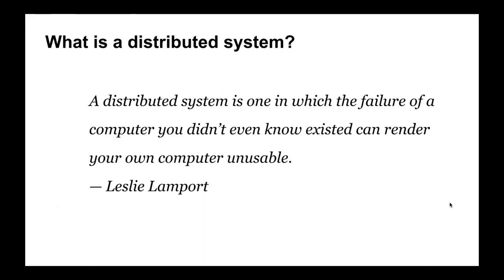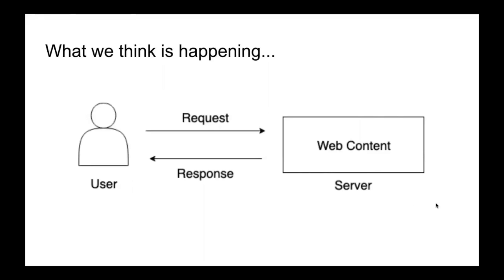So let's start off with some definitions of what is a distributed system. One of the best definitions I found was this quote: a distributed system is one in which the failure of a computer you didn't even know existed can render your own computer unusable. Usually, when just starting out and thinking deeply about how we have software systems that we interact with, we send a request to a server for some web content — could be just a regular website, or it could be trying to get a feed of all the latest tweets from Twitter — and we get a response. For our eyes, that's really all that we experience: we just send a request and get something back.